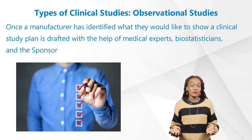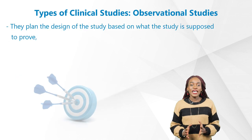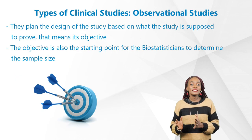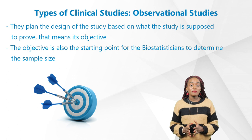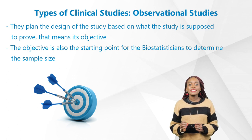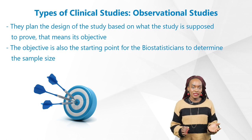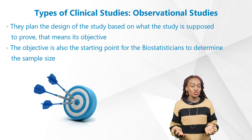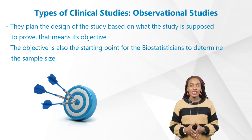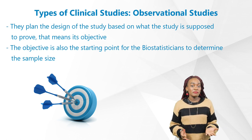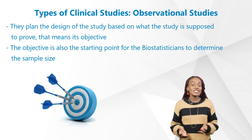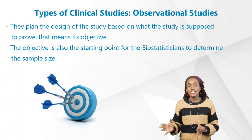Once a manufacturer of products — whether it's a device or a drug — has identified what they would like to show, for example the safety and performance of a medical device, or that a certain drug is effective in treating patients, a clinical study plan is drafted with the help of medical experts, biostatisticians, and the sponsor. Together they plan the design of the study based on what the study is supposed to prove — that means its objective. The objective is also the starting point for the biostatisticians to determine the sample size, meaning the number of patients required. If too many patients are required, this can lead to adjusting the study design or even the objectives.